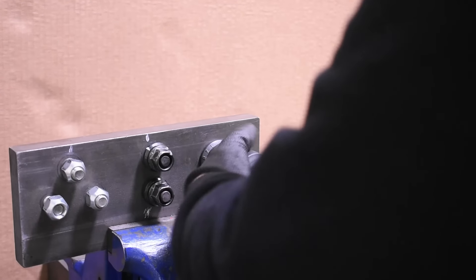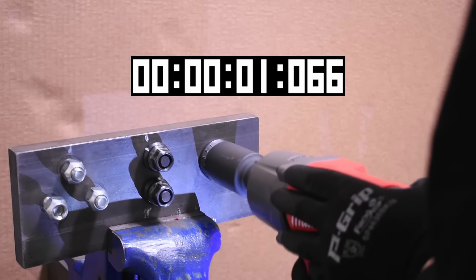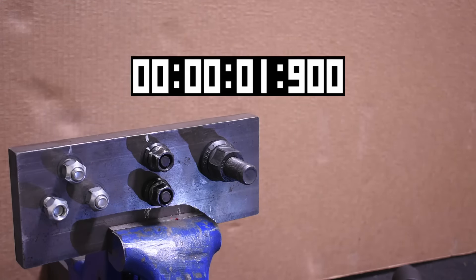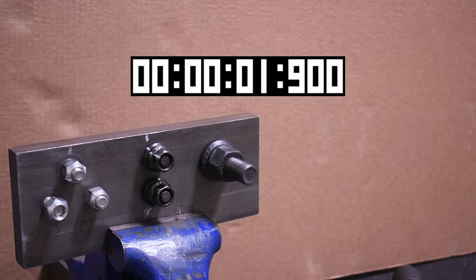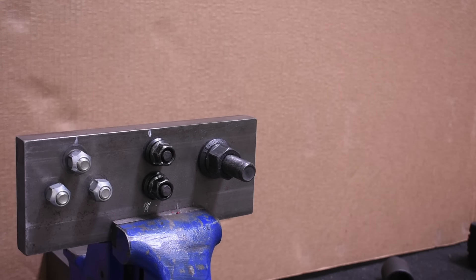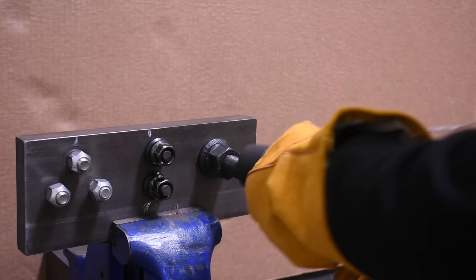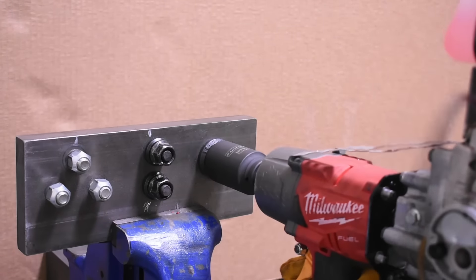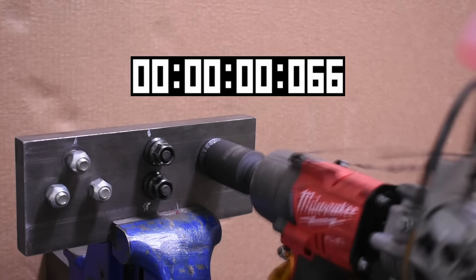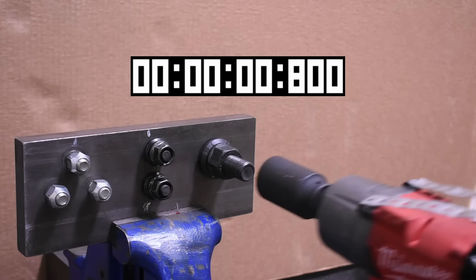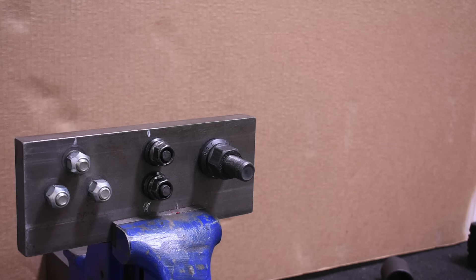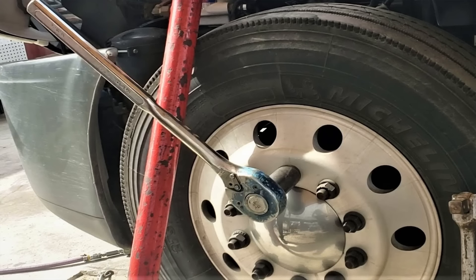Here's the M18 doing that. 1.9 seconds, hard to be disappointed with that. And here's our M60. 0.8 seconds, just under half the time. Imagine doing 10 lugs on a semi truck in just under eight seconds of impacting.